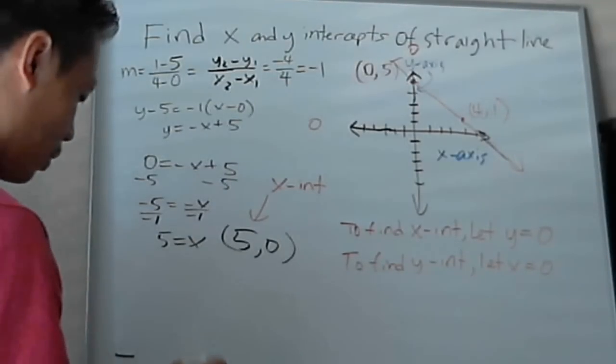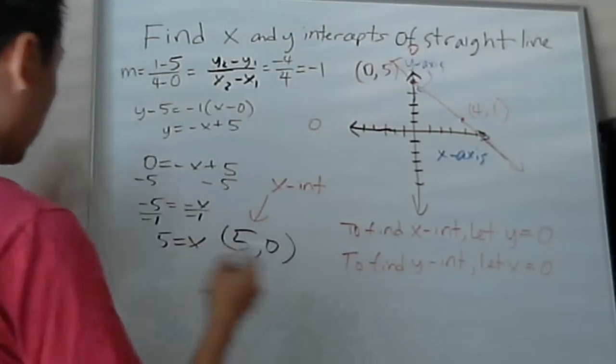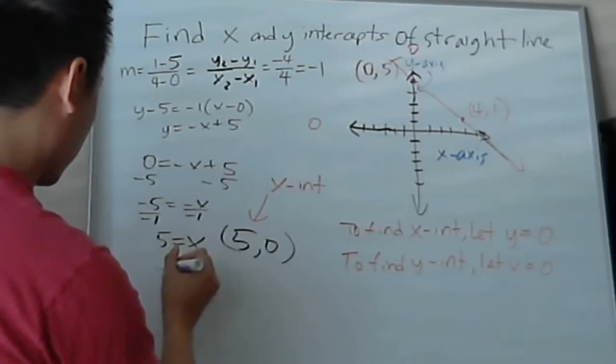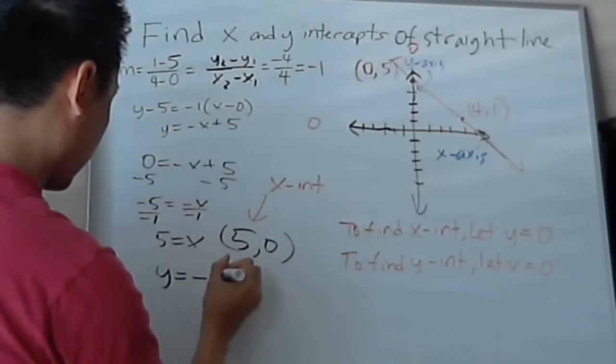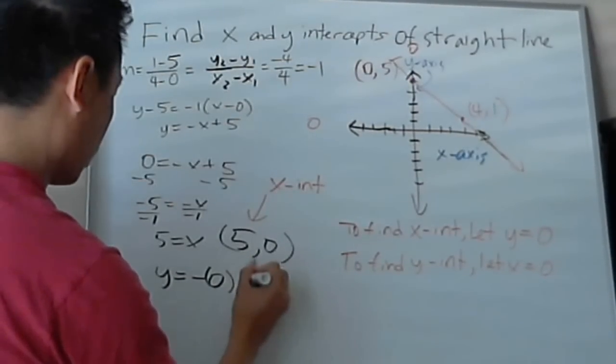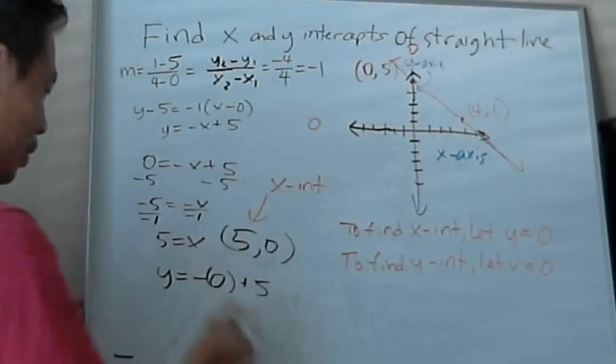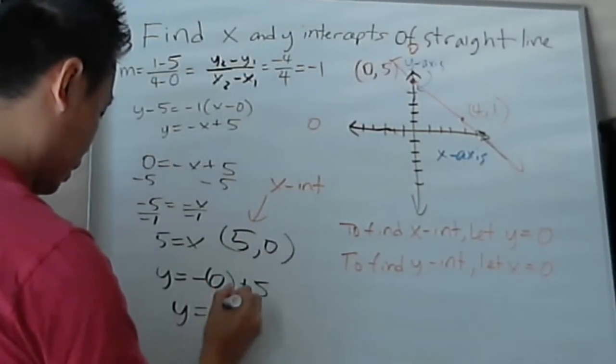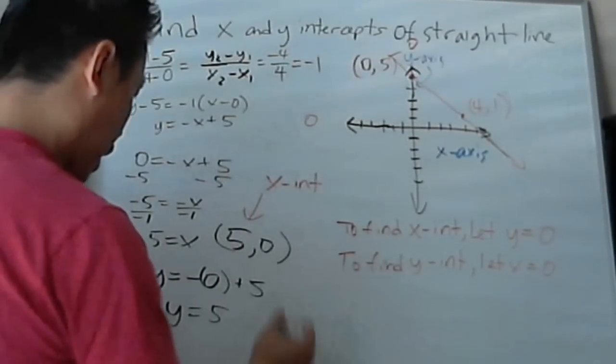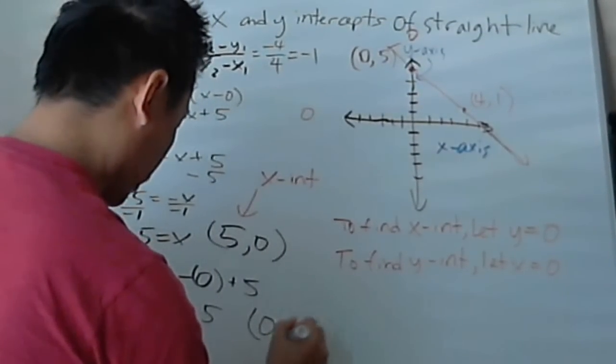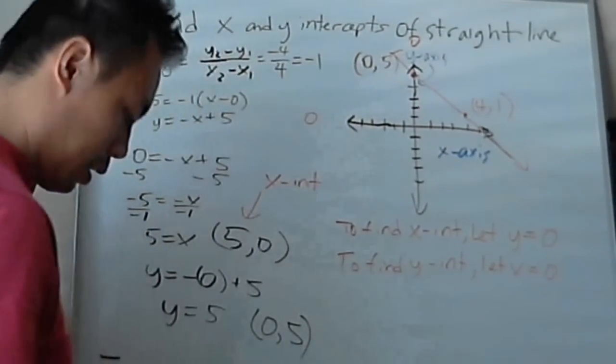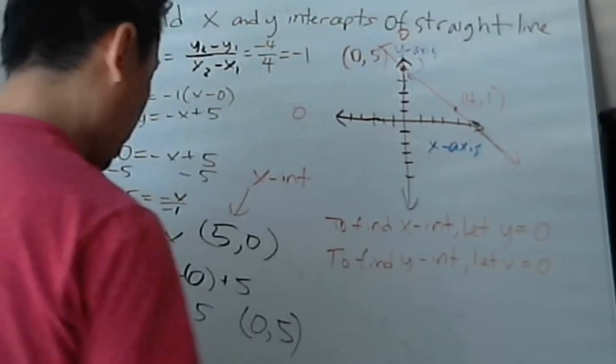So let's do that equation. Instead, now you're going to have y equals negative 0 plus 5, and then negative 0 is 0. So y equals 5, and you'll get the point 0, 5, and that will be the y-intercept.